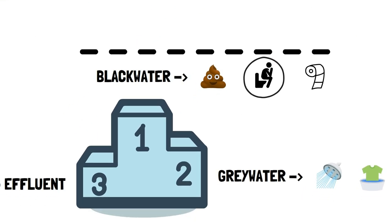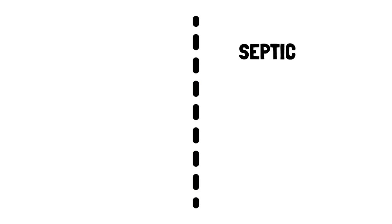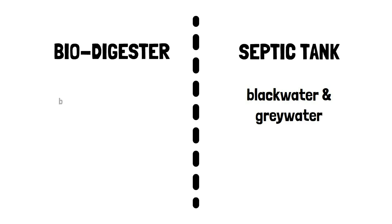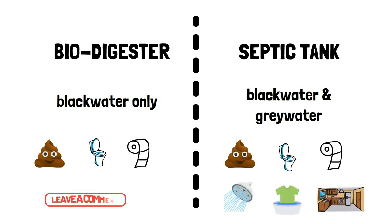A biodigester mainly treats black water, which is all these that I mentioned before. This is actually a major difference in the design between a septic tank and a biodigester, as a septic tank treats both grey water and black water. Should I do a comparison video between the two systems? Let me know in the comments.